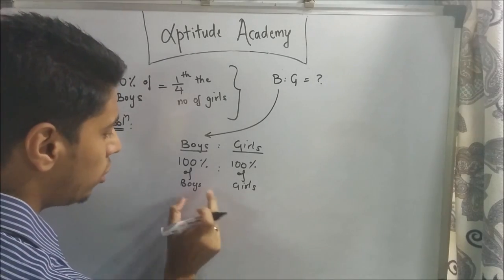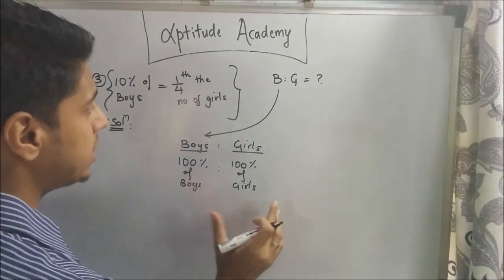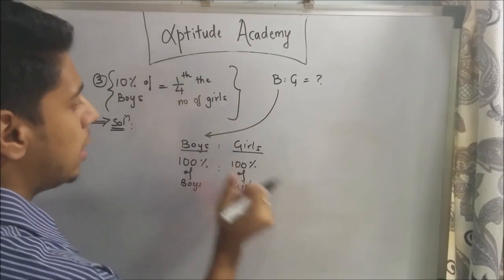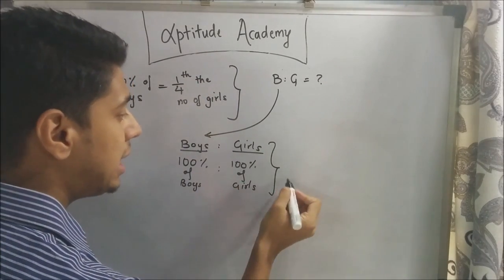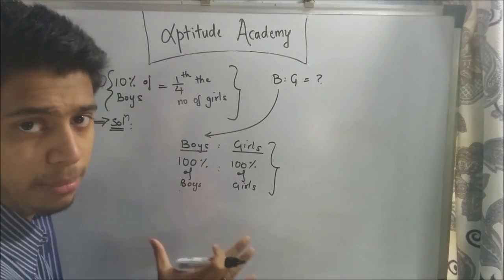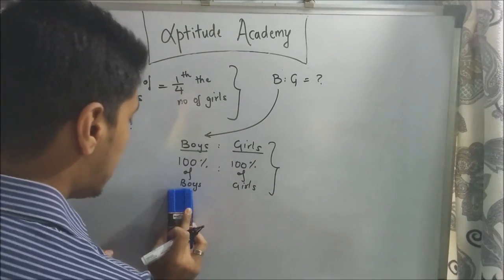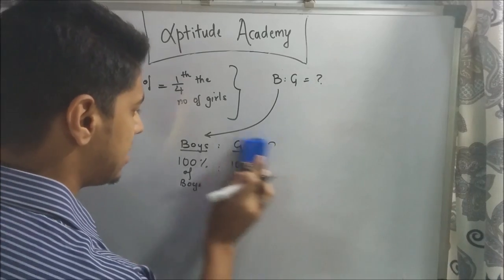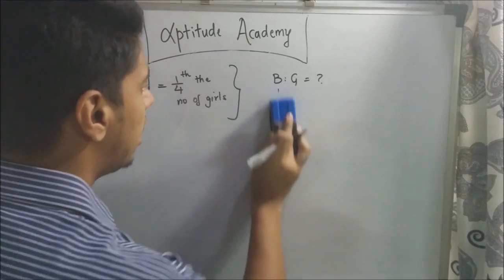But you don't know the actual numbers. Using this information, we'll express the number of girls in terms of boys. Then the boys cancel out, and you just have numbers remaining. Let's calculate.